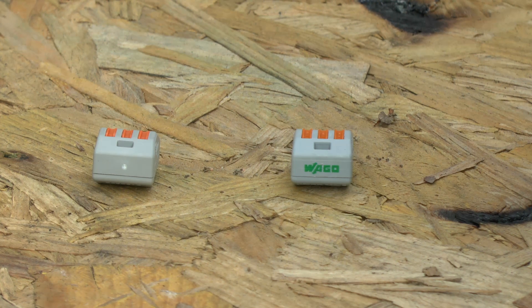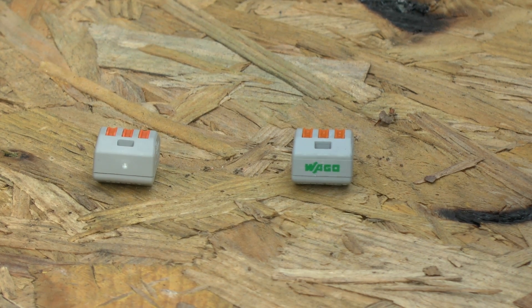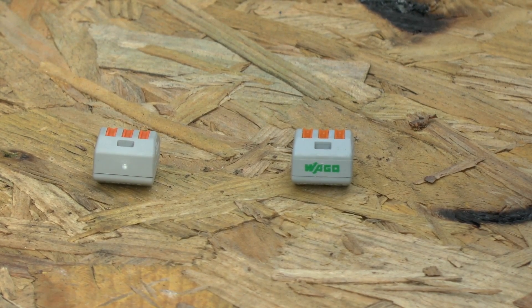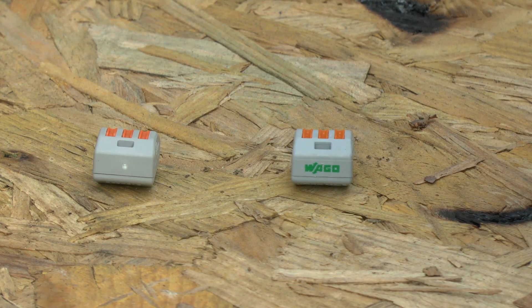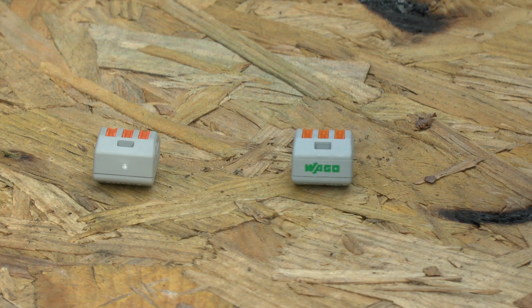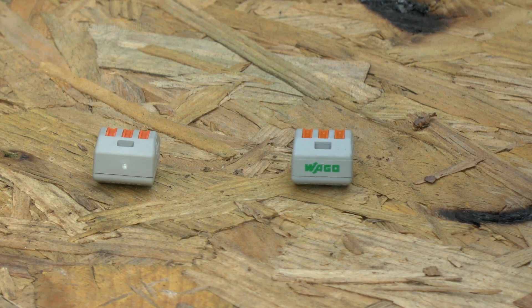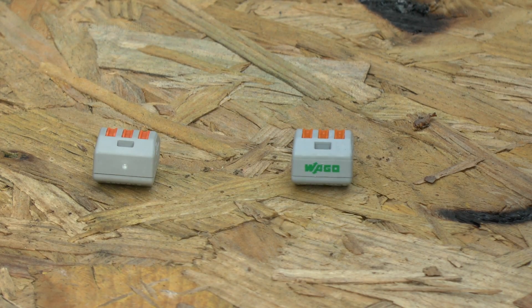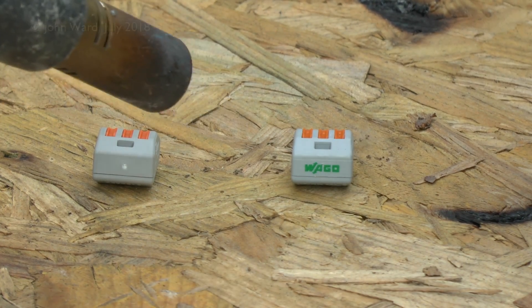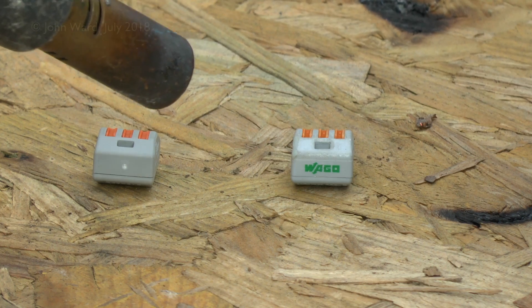Now for the first test, we're going to apply a flame to these and see what happens. Now we're doing this outside, obviously. Unfortunately, it's a windy day, and also the sun keeps going in and out as well. So the lighting might go a bit wrong on some of these, but that's just how it is. Now if these things actually burn, what should happen is that when the flame is removed, they should self-extinguish. So we're just applying the flame there to the WAGO one.